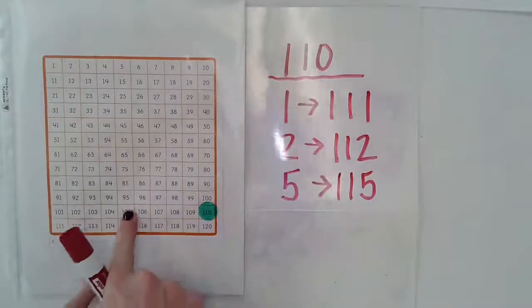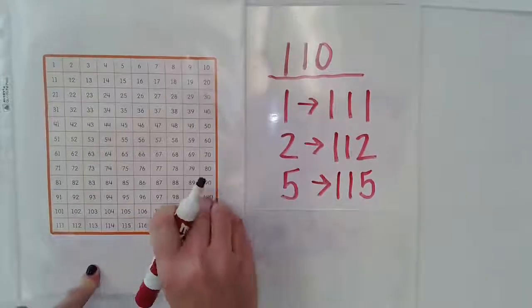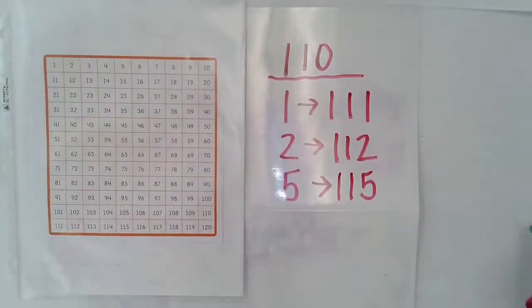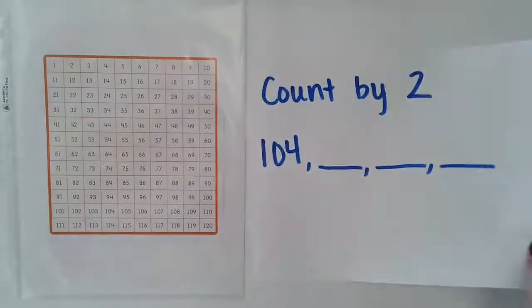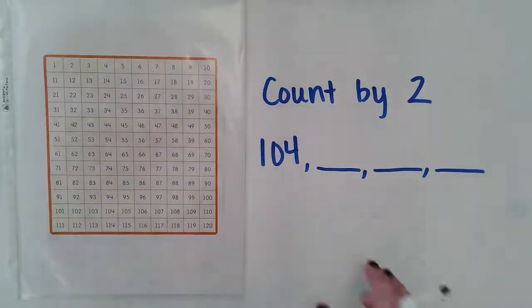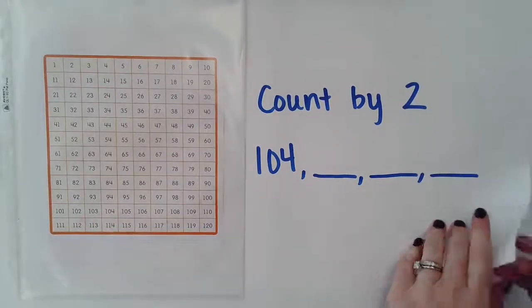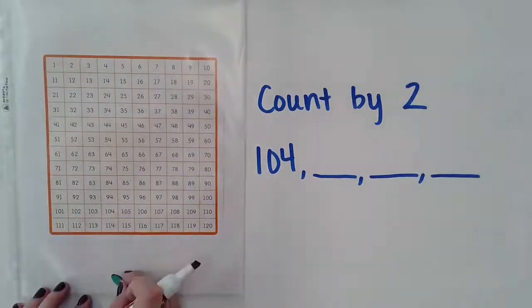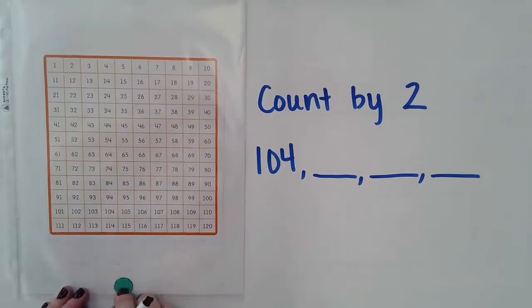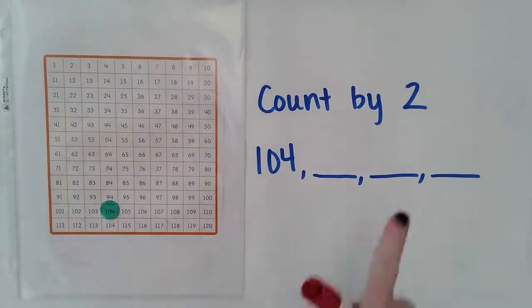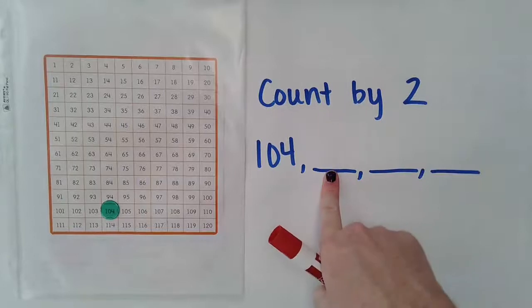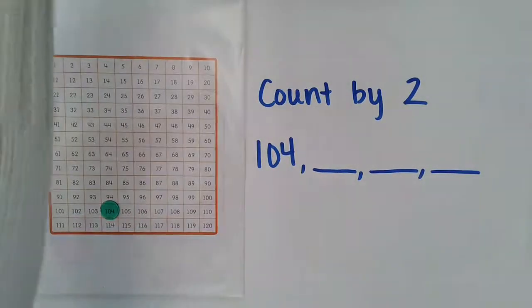All right, so now what I'm going to do now is I'm going to give a number, and we're going to count up by our twos. So this time we're going to be starting with 104. So I'm going to find 104 on my chart and leave my marker, and this time I'm going to count up by my twos to find a new number.